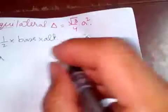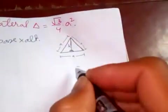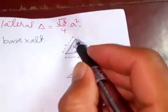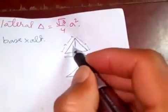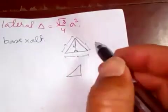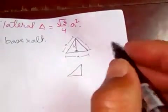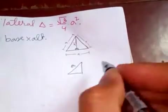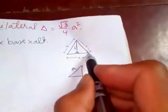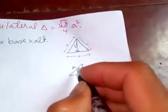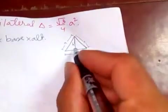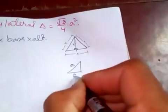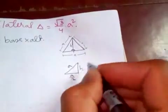Now in order to find this, since we drew one perpendicular line here, this divides into two right angle triangles. So let's consider one of them. This is 'a' and this is 'a', so since it divides in half, this length will be a/2, and this is h.